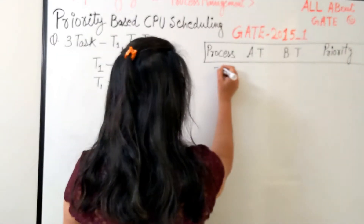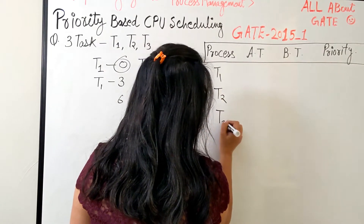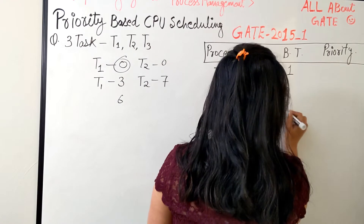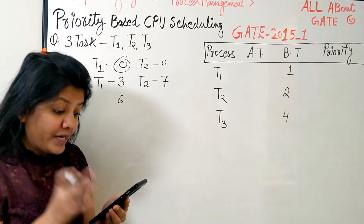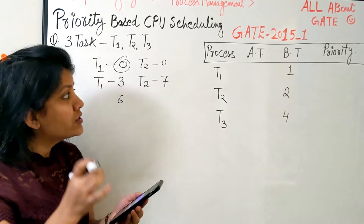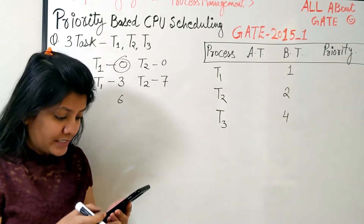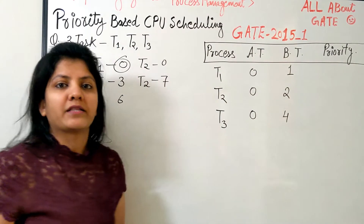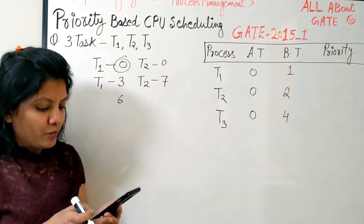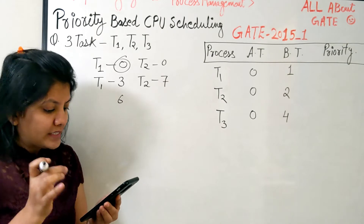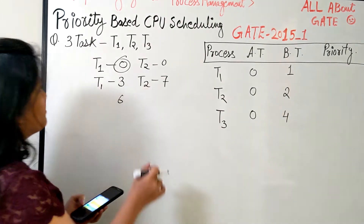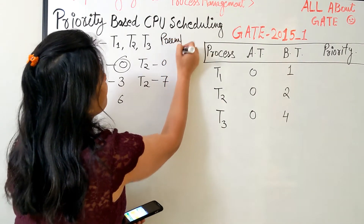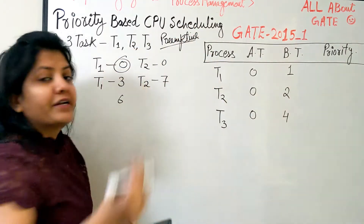Each instance of T1, T2, and T3 requires execution times of 1, 2, and 4 milliseconds respectively. All tasks initially arrive at the beginning of the first millisecond — meaning at time zero. Task preemptions are allowed, so we use a preemptive priority-based scheduling algorithm.